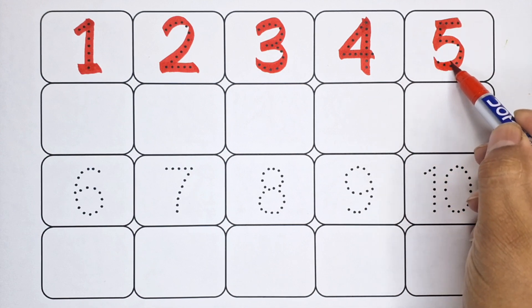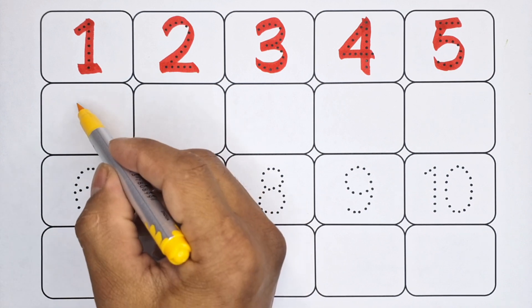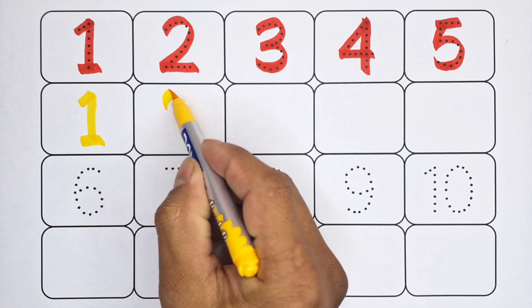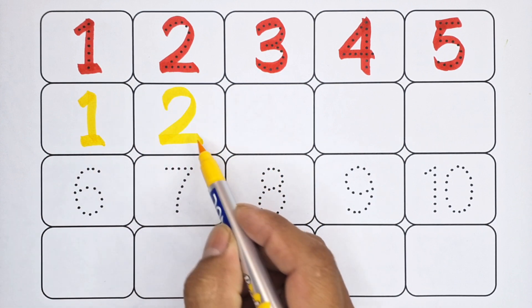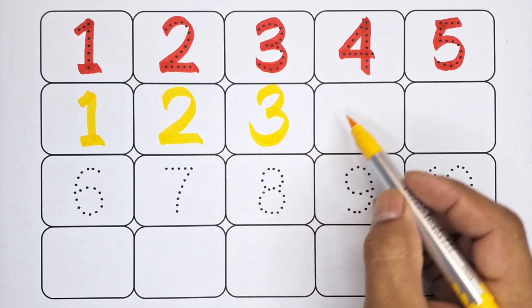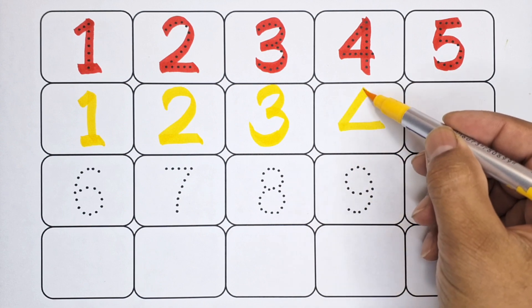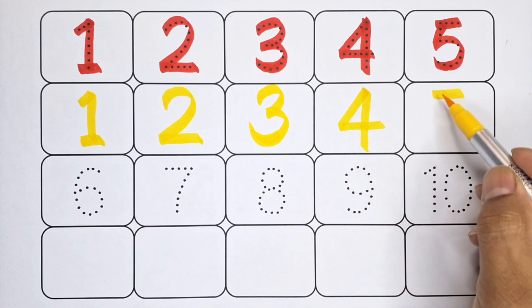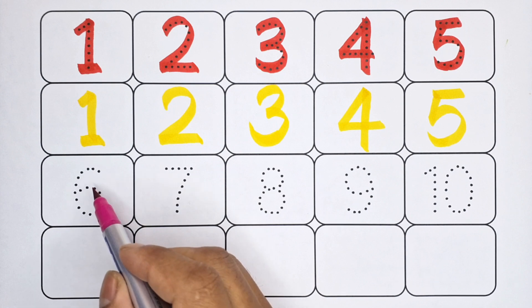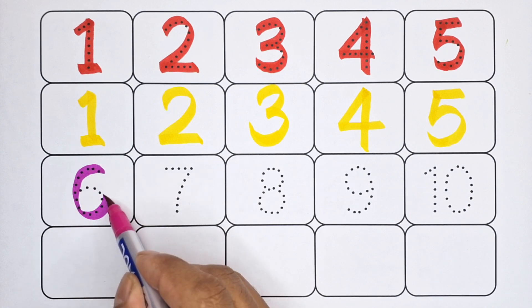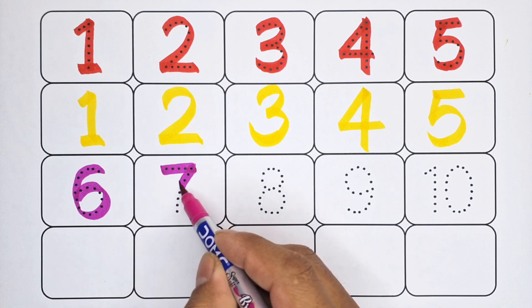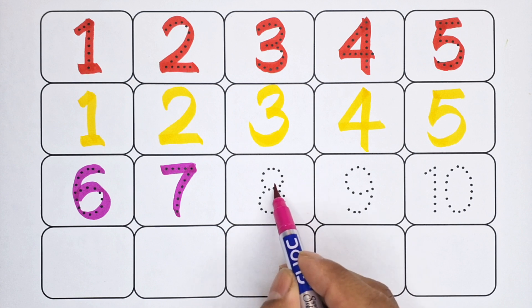Number 5 — yellow color. Number 1, number 2, number 3, number 4, number 5 — pink color. Number 6.